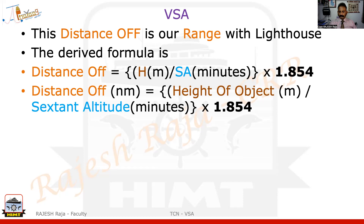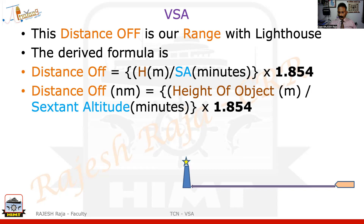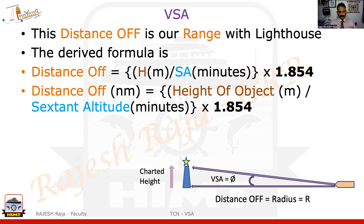Pictorially: let us say your vessel is here and the lighthouse is here — you are some distance off. You take a vertical sextant angle theta, and the chartered height of the lighthouse is given on the chart. Using this formula you get the distance off, which is your radius, allowing you to draw a position circle on the chart.